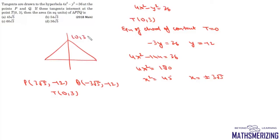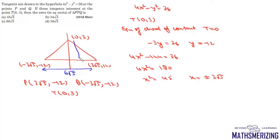With T at (0, 3), Q at (−3√5, −12), and P at (3√5, −12), the length of the base PQ is 6√5 and the height is 15. So the area of triangle PTQ is ½ × 6√5 × 15 = 45√5 square units. That's option A.